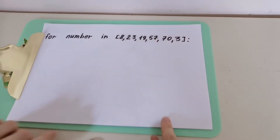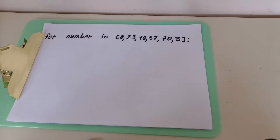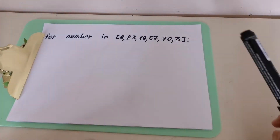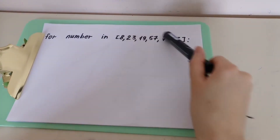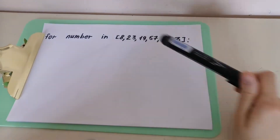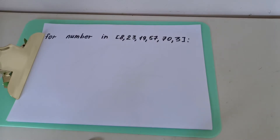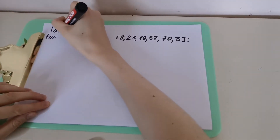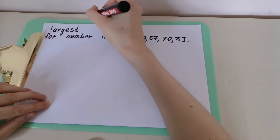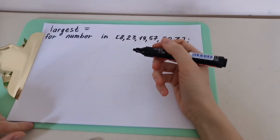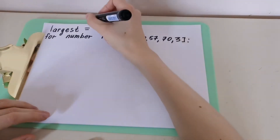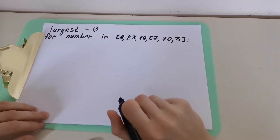The list is: 8, 23, 19, 57, 73. Let's try to find the largest value. How can we do that? We can compare all these numbers with some value from outside. Let's create a variable and call it `largest`, and assign it a very small number.